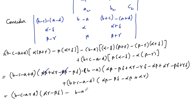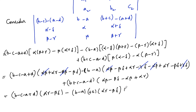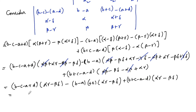Cancelling terms throughout: alpha·beta minus alpha·beta cancels in each expansion. In the middle term we get minus beta·delta minus beta·delta giving minus two times beta·delta, and alpha·gamma plus alpha·gamma giving two times alpha·gamma, while gamma·delta terms cancel. So the middle cofactor gives minus two times (alpha·gamma minus beta·delta). The last term's cofactor again gives (alpha·gamma minus beta·delta) after cancellation.